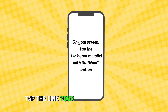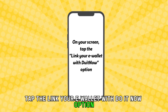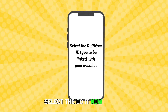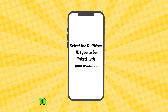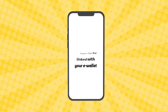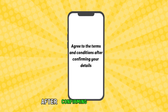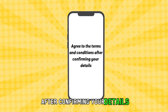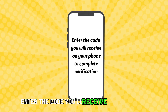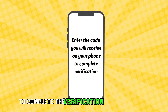On your screen, tap the Link your eWallet with Do-It-Now option. Select the Do-It-Now ID type to be linked with your eWallet. Agree to the terms and conditions after confirming your details, then enter the code you'll receive on your phone to complete the verification.